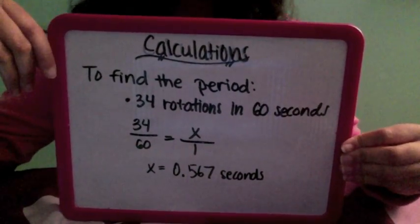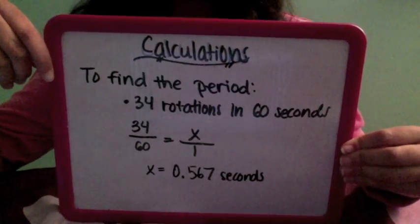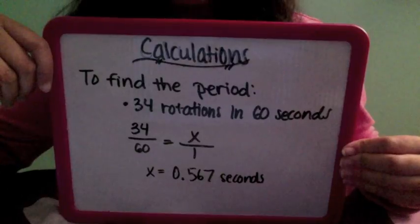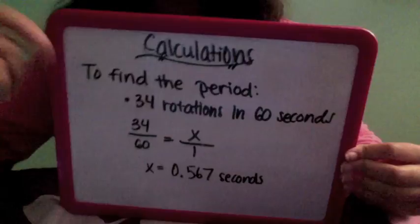Based on our procedure, we found that there were 34 rotations in 60 seconds. We made a proportion and found that the period equals 0.567 seconds.